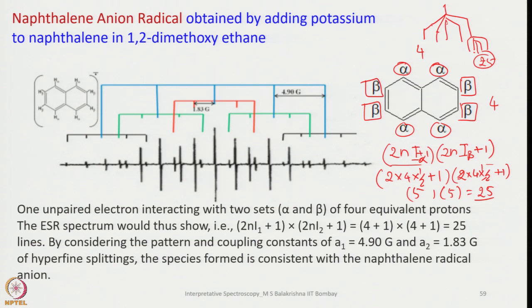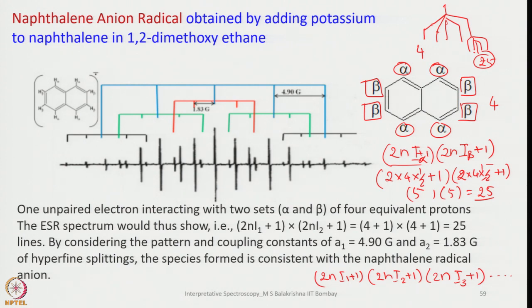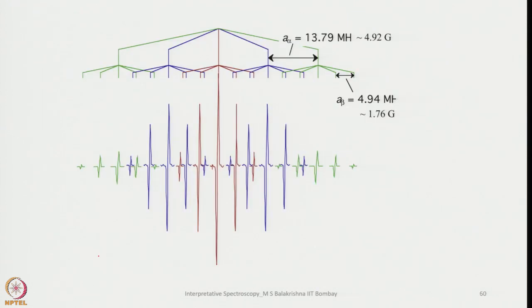If there are 3 or 4 sets of non-equivalent nuclei, this product formula can continue accordingly, and the product gives the total number of lines in the EPR spectrum. You can see this in the spectrum shown here. In some cases, lines merge, and as a result we observe fewer lines than theoretically expected.